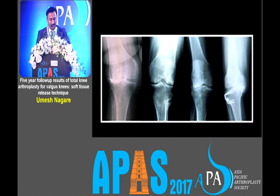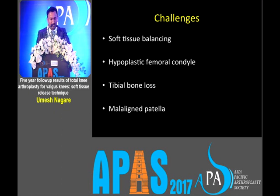There are a few of the cases where you see the primary osteoarthritis valgus, sometimes rheumatoid, and sometimes the patient having a high tibial osteotomy. The challenges in valgus are always the soft tissue balancing, hyperplastic lateral femoral condyle, tibial bone loss, and mal-aligned patella.